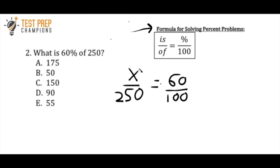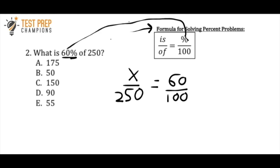So if you want to use this approach, you'll want to memorize: is over of equals percent over 100. You won't be given this on your test and most textbooks don't teach this method, so you'll definitely want to memorize it. Looking at the problem, it says 'what is 60%?' so in the formula, you substitute 60 in place of the percent sign.